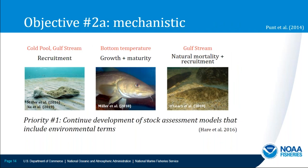A useful distinction can be made between two ways of allowing for time-varying productivity, drawing from a 2014 paper by Andre Punt. The first is mechanistic: directly estimating an effect of an environmental variable on a population dynamic process. Tim Miller and colleagues have published examples, including yellowtail flounder recruitment tied to the Gulf Stream, Atlantic Cod growth and maturity tied to bottom temperature, and summer flounder natural mortality and recruitment tied to the Gulf Stream.